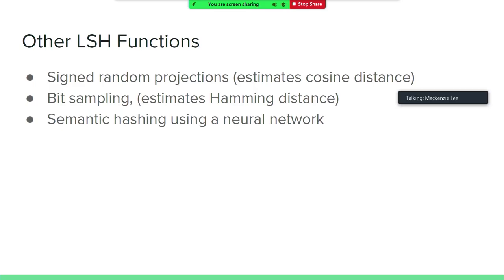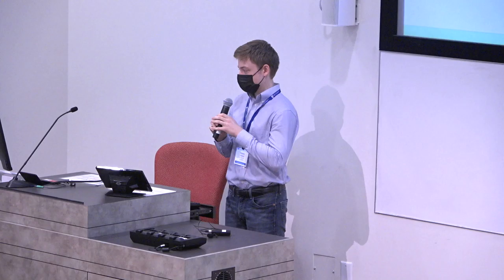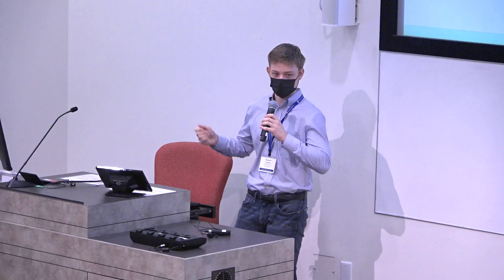There are many other LSH functions. If you're interested in the cosine distance, you can use signed random projections. You can use what's called a P-stable LSH function for things like the Euclidean distance and the Manhattan distance — the L1 and L2 distances in R^D. We've also got bit sampling, which estimates the Hamming distance. And if you're interested in a similarity score defined by behavioral patterns — for example, two pictures of me, or a picture of me and something I associate closely with like Rice University — you can use something called a learned LSH function, which learns to partition those items such that similar items usually go to the same location. At this point, we have a demo of LSH.